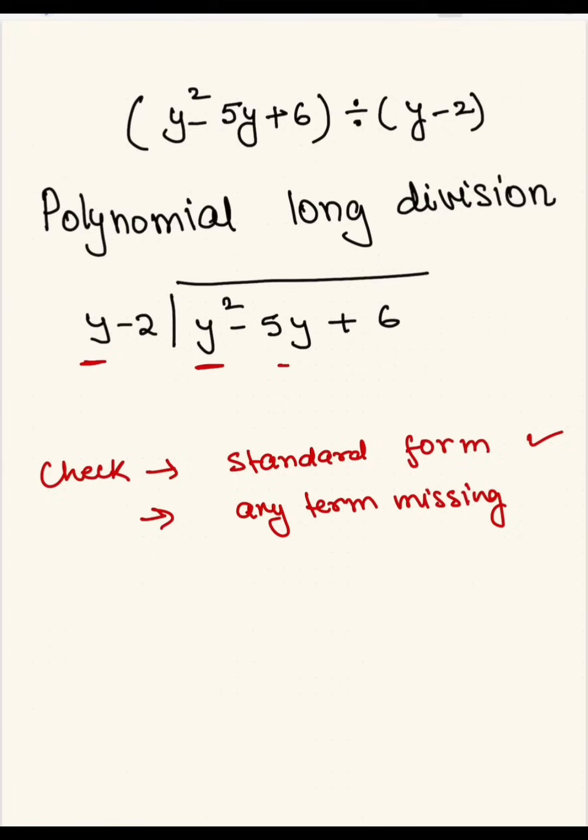What do I mean by missing term? Since the highest power is 2 here, do we have a term with 1 power and then do we have a constant term? So it seems like the question is written in standard form and nothing is missing. No term is missing in this case.